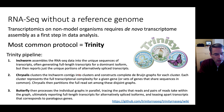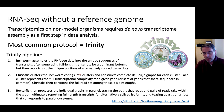The most common protocol and software is called Trinity, which is both a protocol and a software package. It's really a pipeline that does three steps: Inchworm, Chrysalis, and Butterfly. Trinity is pretty easy to deploy in a local environment, but on real experiments with 50–100 million reads, that's not something you'd want to do on a laptop.